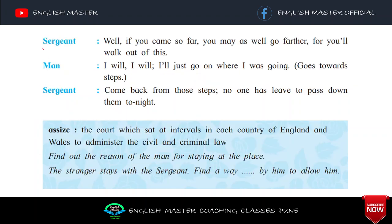Man: 'I will. I'll just go on where I was going.' Goes towards steps. Sergeant: 'Come back from those steps! No one has lived to pass down them tonight.' Woh step se peeche aajao — yahan se aaj raat koi bhi aagey nahi jayega. Assizes ka matlab hai — the court which sat at intervals in each county of England and Wales to administer the civil and criminal law. Yaani yeh jo word hai, assizes ka matlab hai ghoomta hua phirta hua court jo jagah par law and order ko follow karta hai.